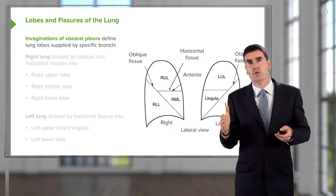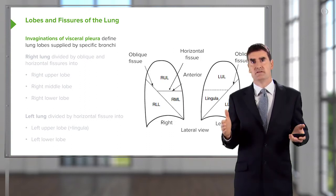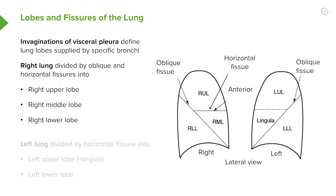Each of those bronchi will feed air to a specific lobe. On the right-hand side there will be three main lobes: the right upper lobe, the right lower lobe, and the right middle lobe. On the left-hand side there will be a left upper lobe and a left lower lobe. The functional equivalent of the right middle lobe on the left side is called the lingula, which is part of the left upper lobe. These lobes are divided by invaginations of the visceral pleura into the lung, forming fissures — the main one being the oblique fissure between the upper lobes and the lower lobe. On the right-hand side there is an additional fissure called the horizontal fissure, which divides the upper lobe from the middle lobe.